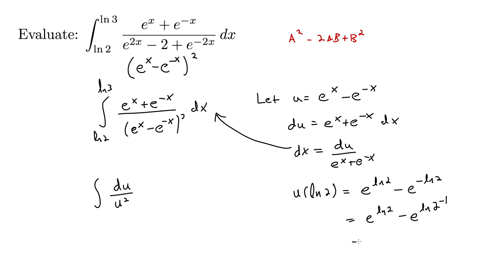So what we're left with is 2 minus 1 half because 2 to the negative 1 is 1 half, which is 3 halves.